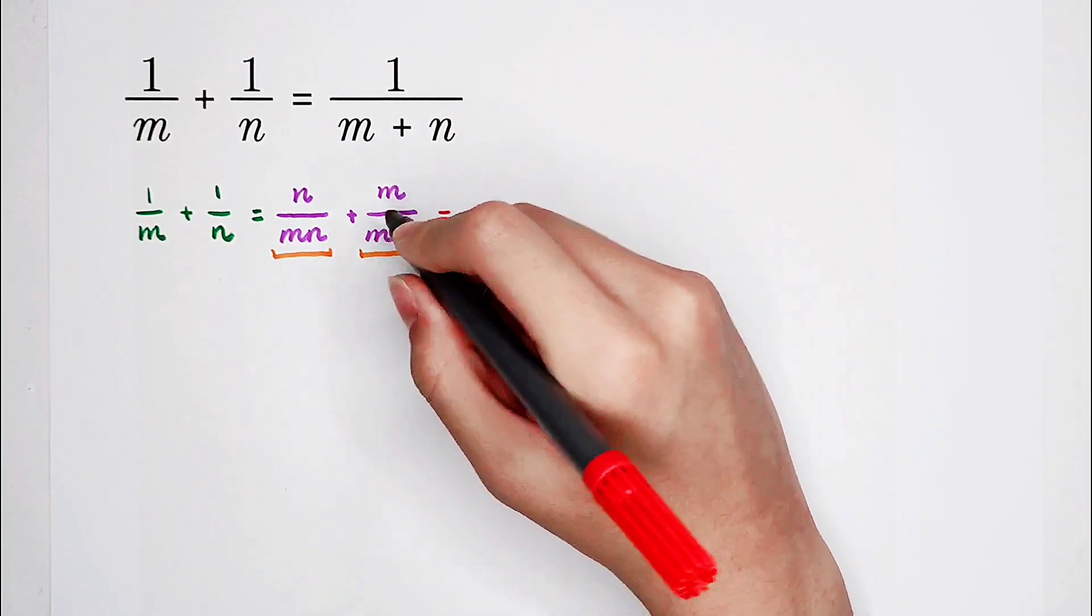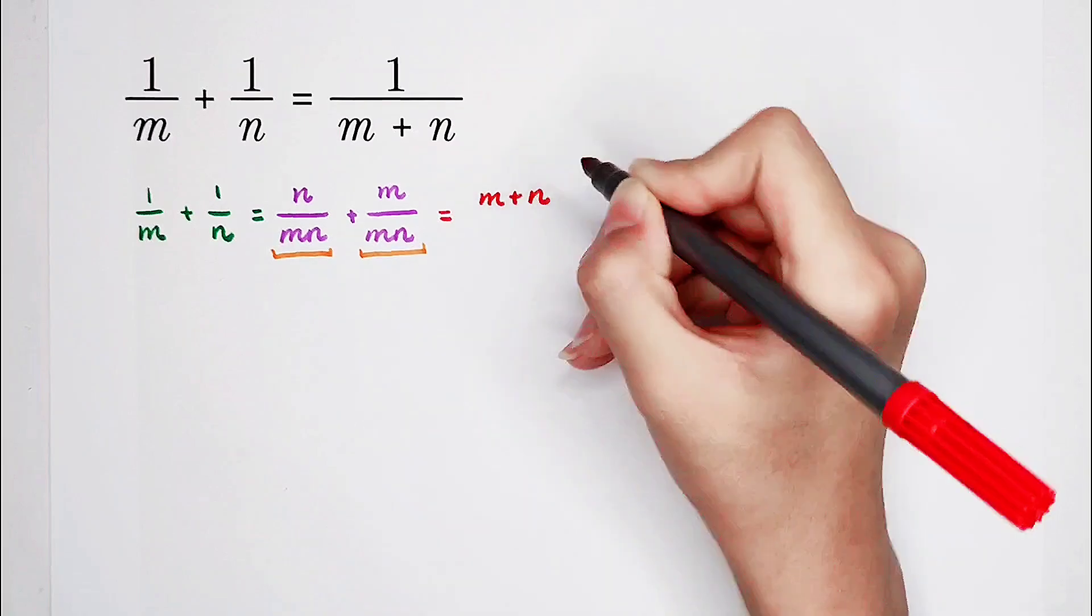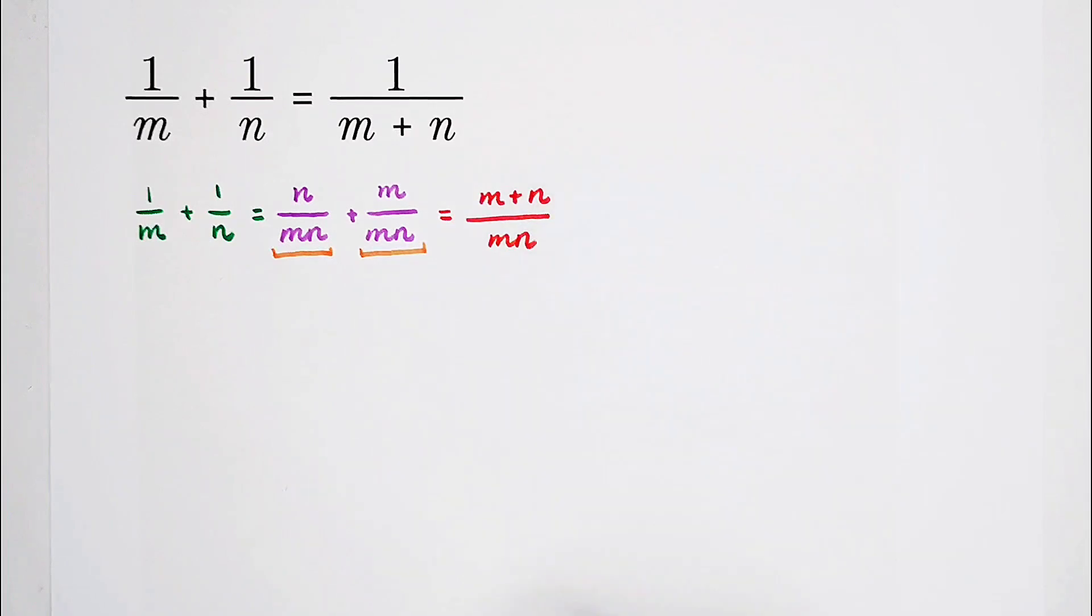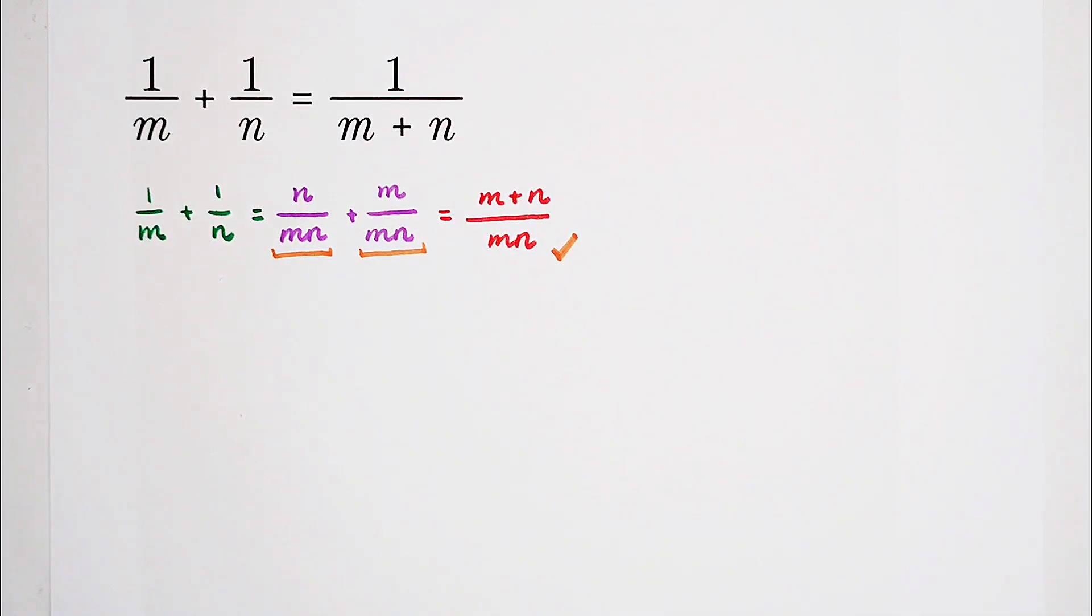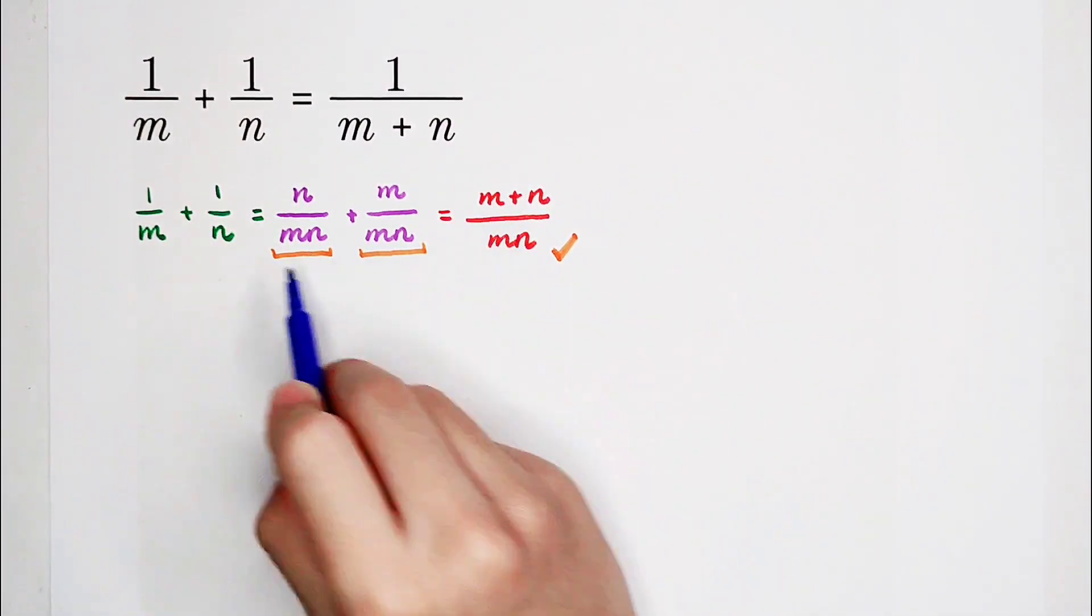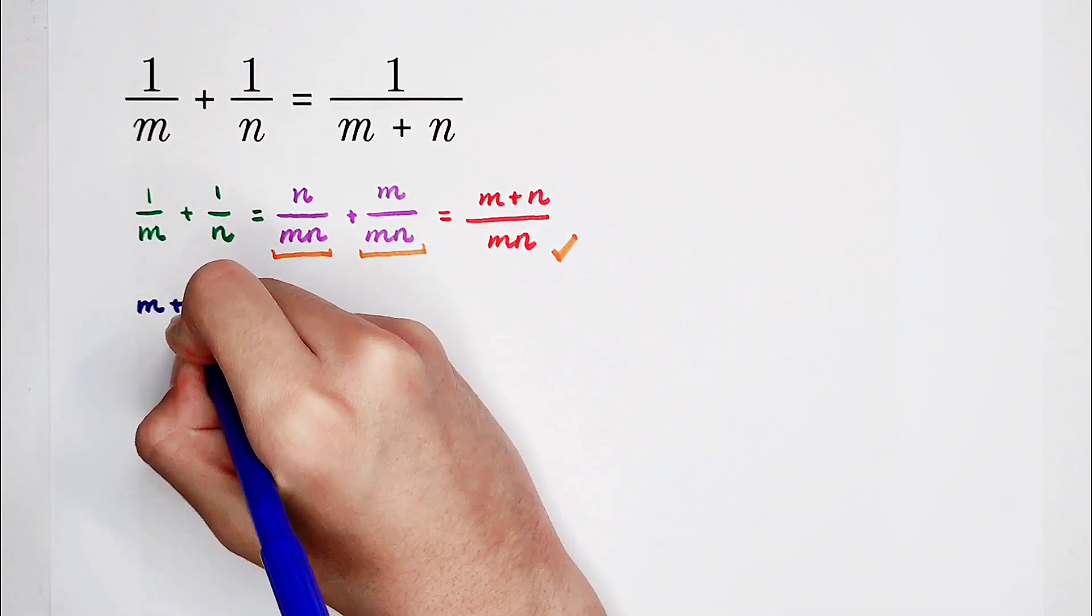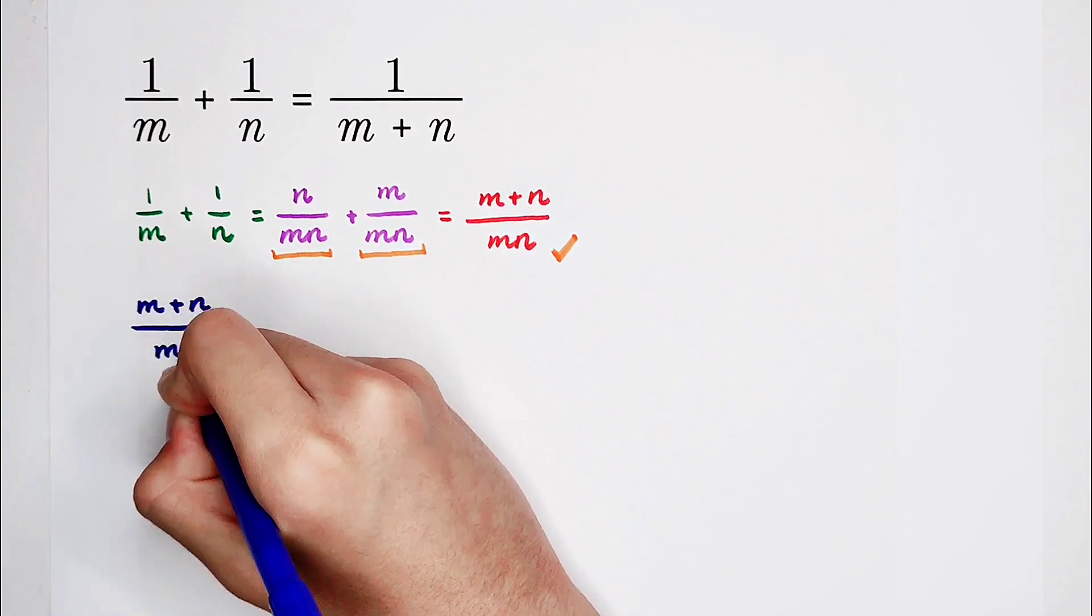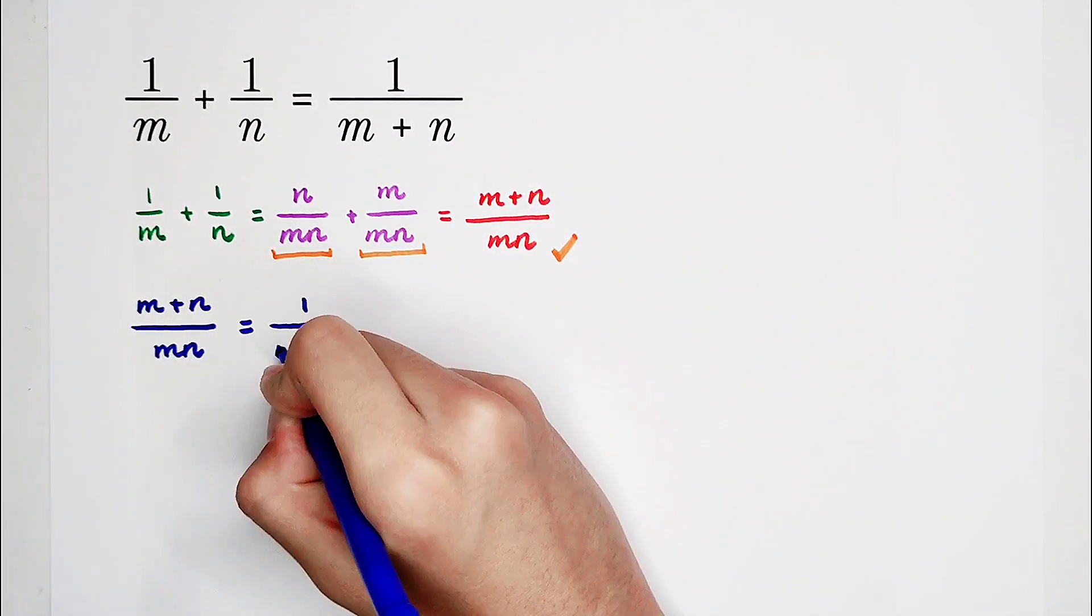It is just equal to the numerator m plus n over the denominator m times n. So that's the simplification. Of course, substitute it into our original equation. So the left-hand side is m plus n over m times n, and the right-hand side is 1 over m plus n.